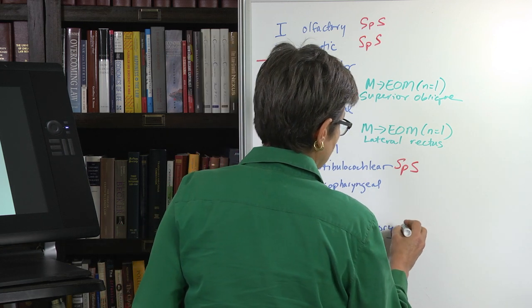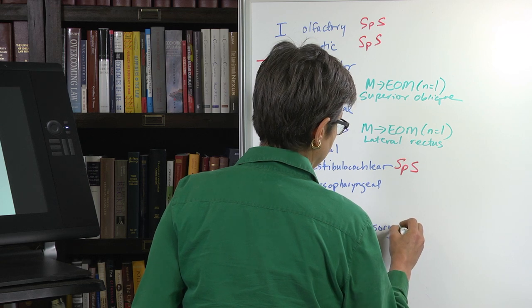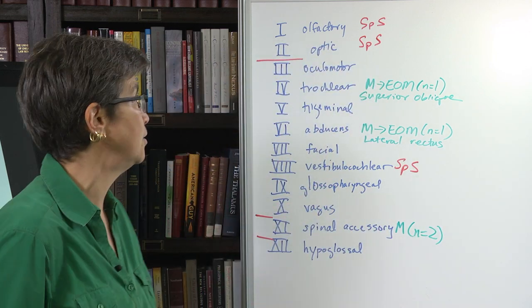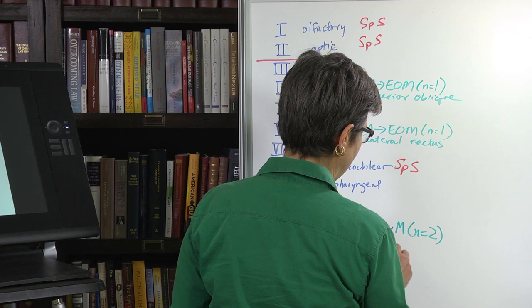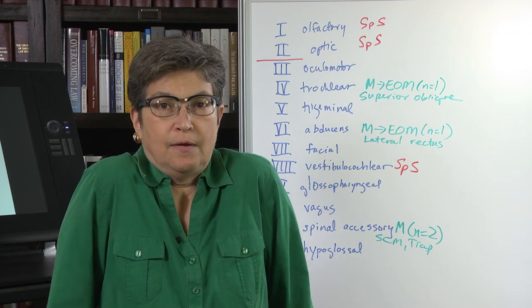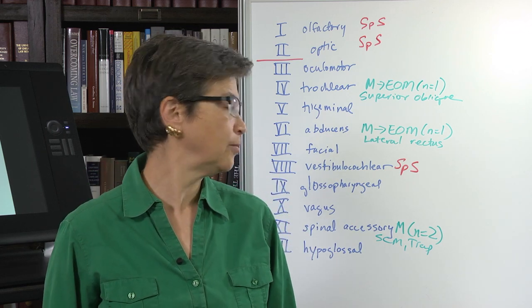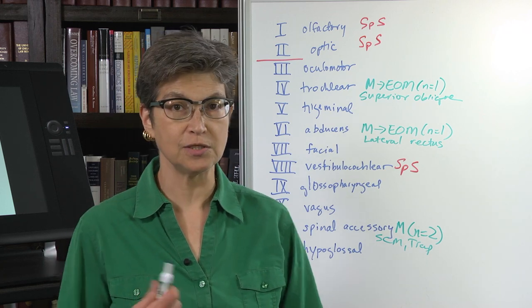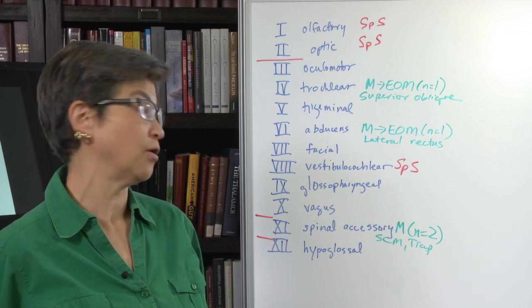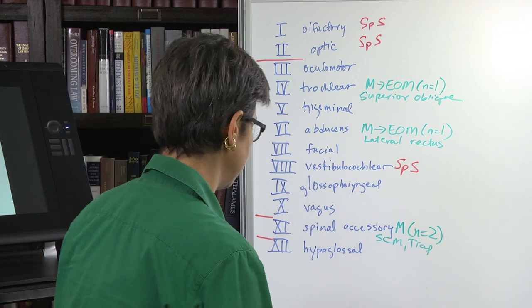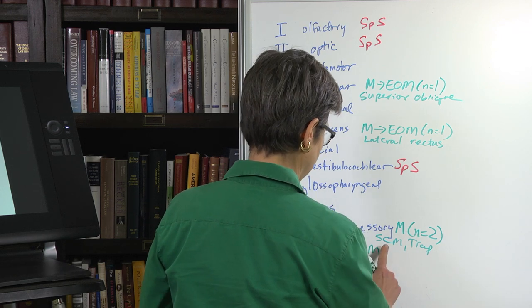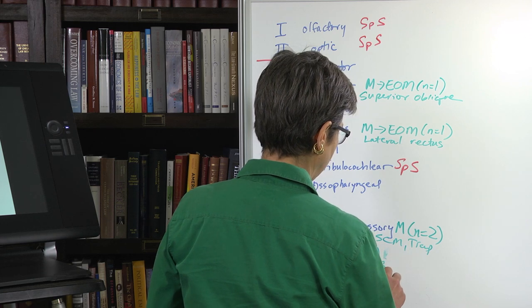The next fairly simple cranial nerve is spinal accessory. This is motor. There are two muscles that it innervates. And that is the sternocleidomastoid and the trapezius. And what we'll see is the trapezius is going to allow you to do this, shrug. And sternocleidomastoid allows you to do this. I think of these as communicative muscles. So they don't allow you to speak, but they do allow you to communicate. Both of these are very highly communicative actions or gestures. And then there's the hypoglossal. I don't know how many tongue muscles there are, but all of the tongue muscles are innervated by the hypoglossal.